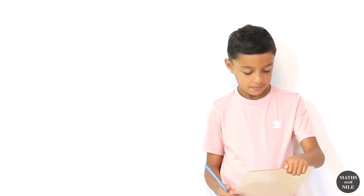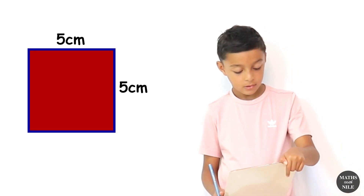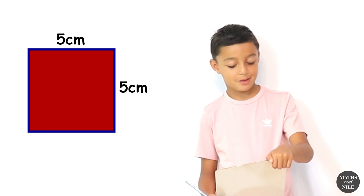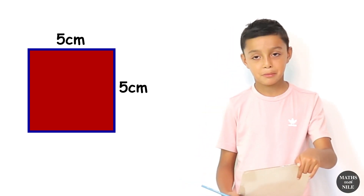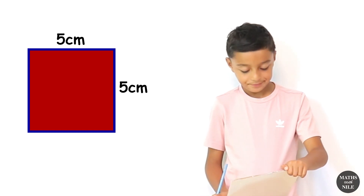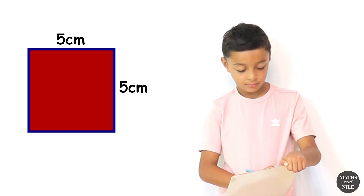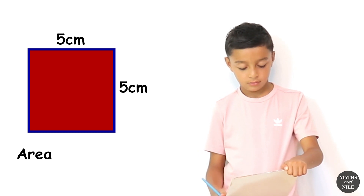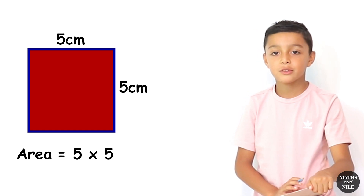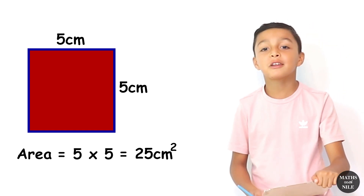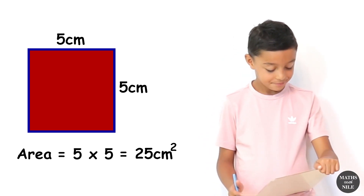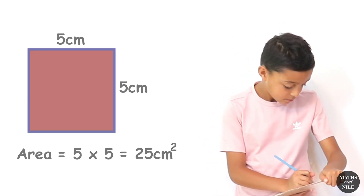Let's look at question number three. What shape is that? It is a square. How do you know it's a square? Because the length is 5 centimetres and the width is 5 centimetres. So it's got equal sides. How are you going to find the area of that square? I am going to do five times five, which is twenty-five centimetres squared. Brilliant, so the area of that square is twenty-five centimetres squared.